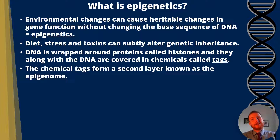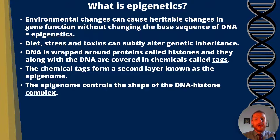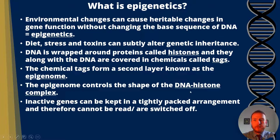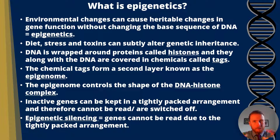The chemical tags form a second layer known as the epigenome. Think about an epidemic — that's when a disease spreads out of a country — or think about an EpiPen, which is an injection of adrenaline from outside of the body. So the epigenome is outside of the DNA bases. The epigenome controls the shape of the DNA-histone complex, and histones are proteins that coil DNA up. Inactive genes can be kept in a tightly packed arrangement and therefore cannot be read, meaning they're switched off. Epigenetic silencing is where genes cannot be read due to the tightly packed arrangement. When we say 'read,' that means expressed — that means RNA polymerase comes along and reads a gene, forming a new molecule of mRNA.